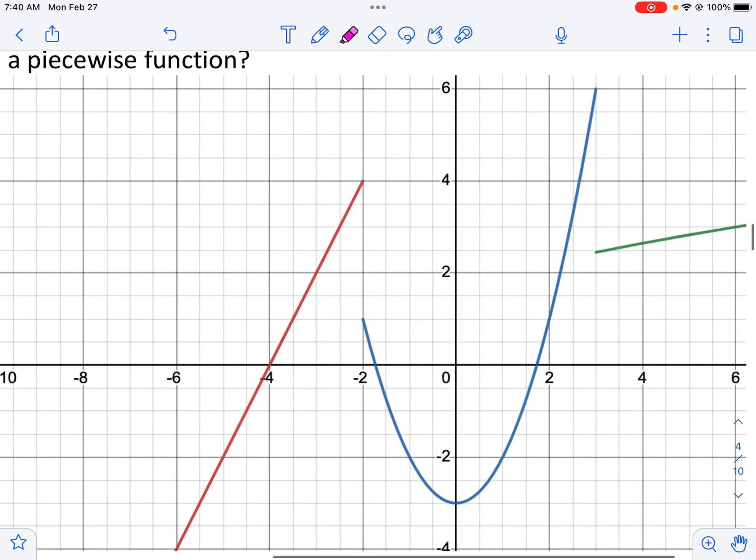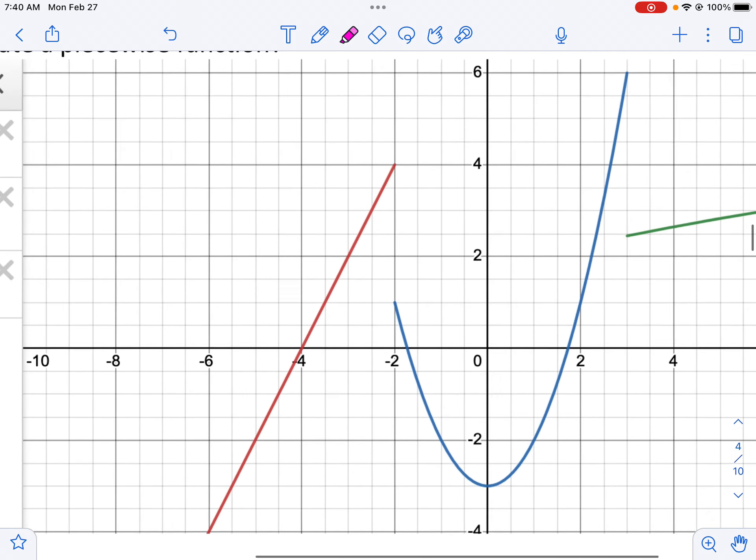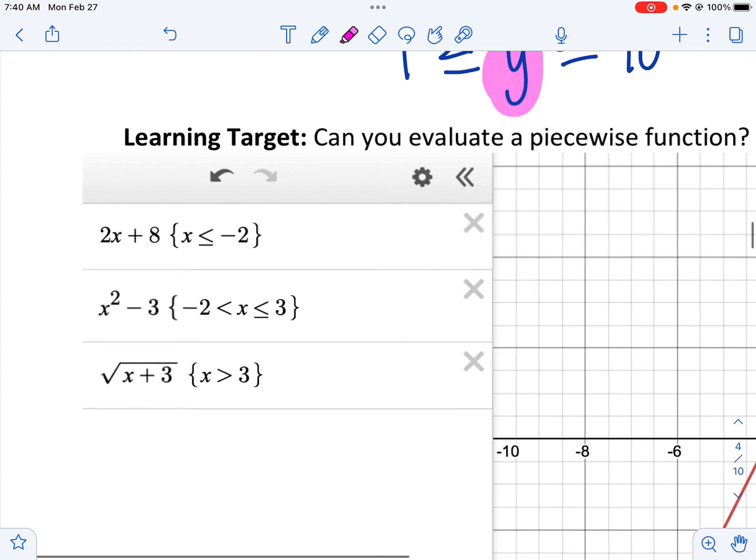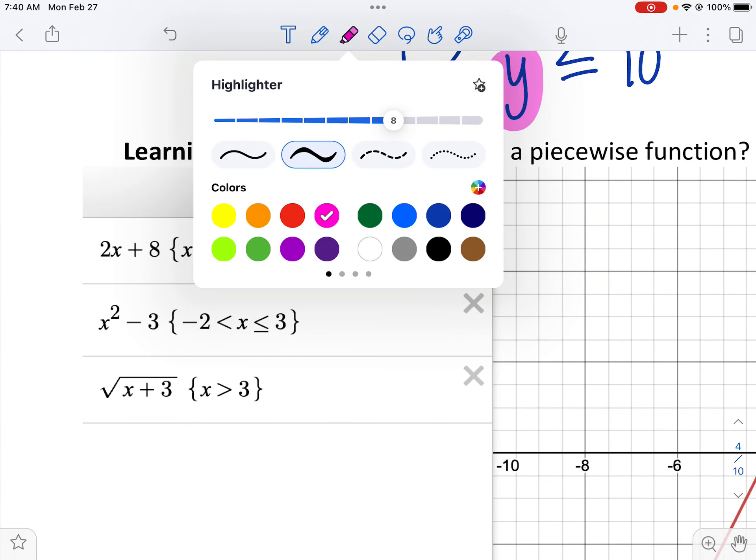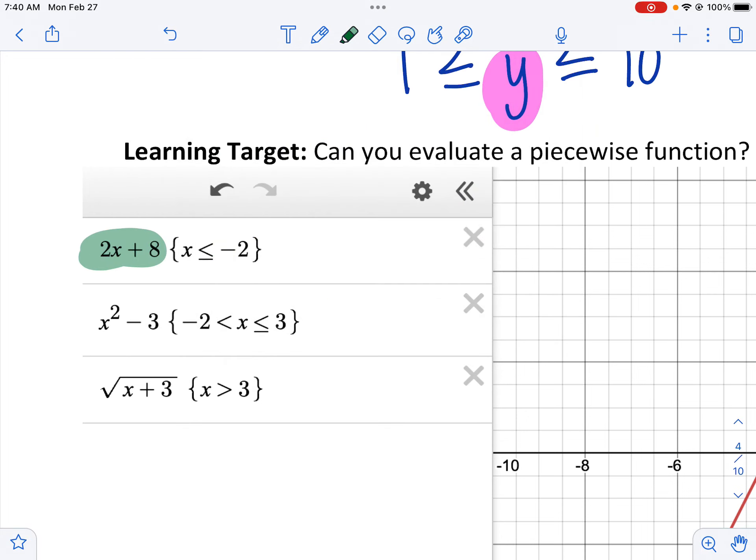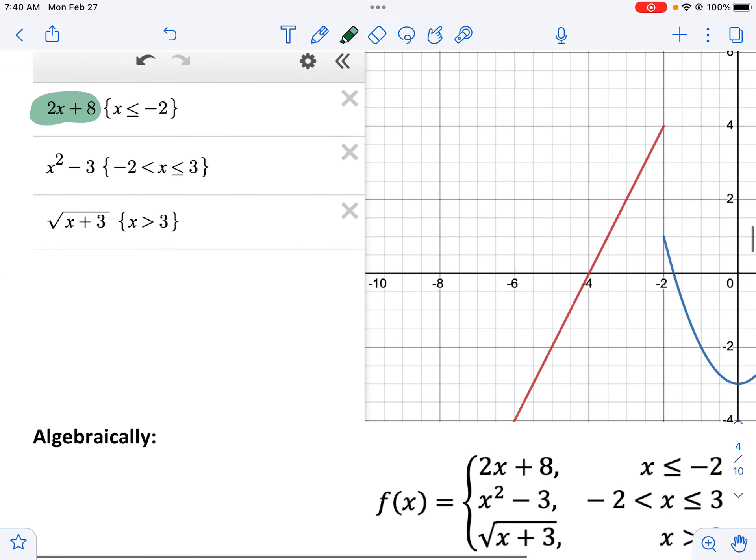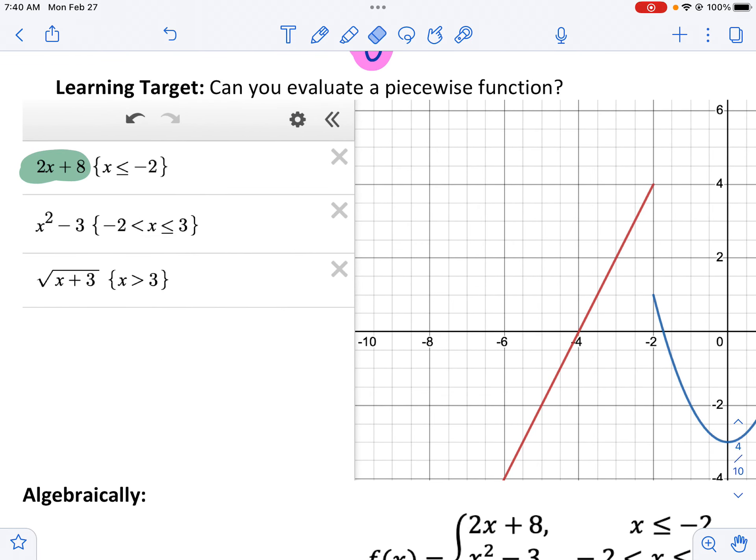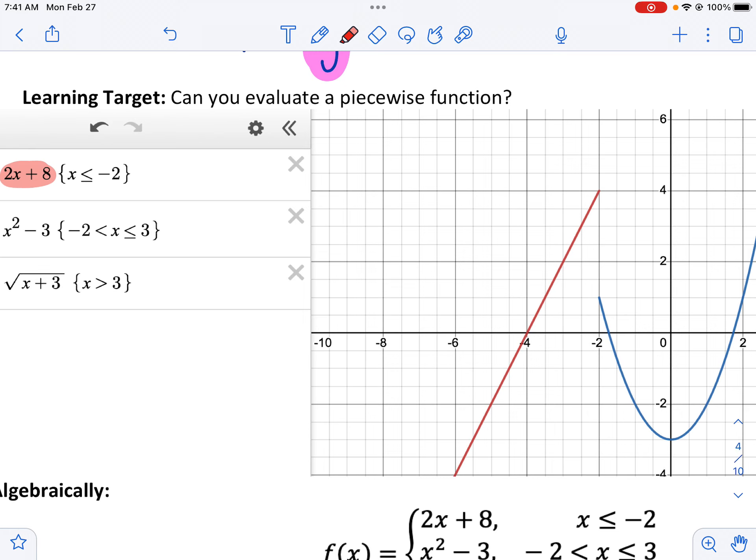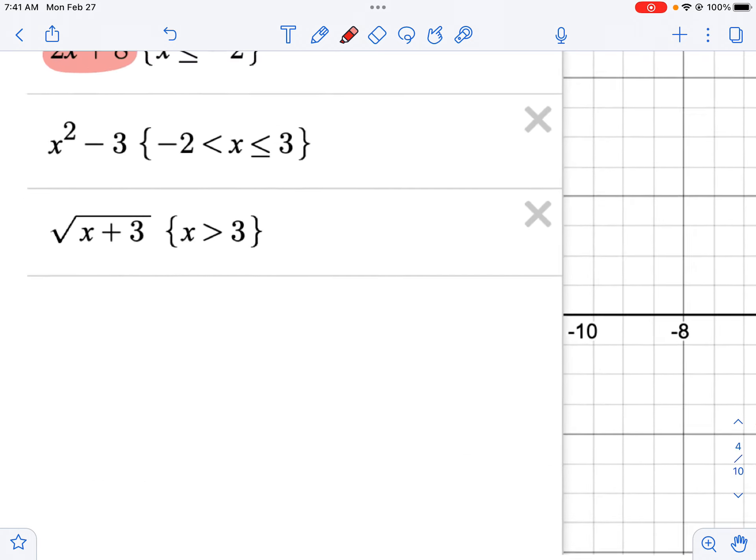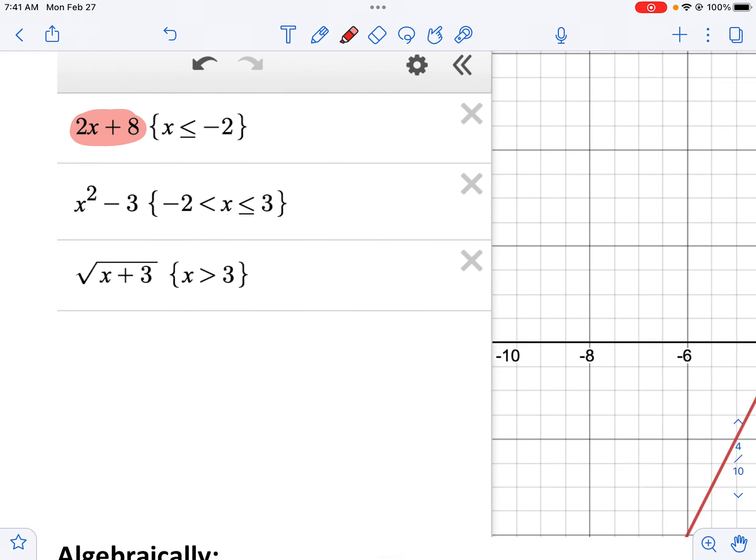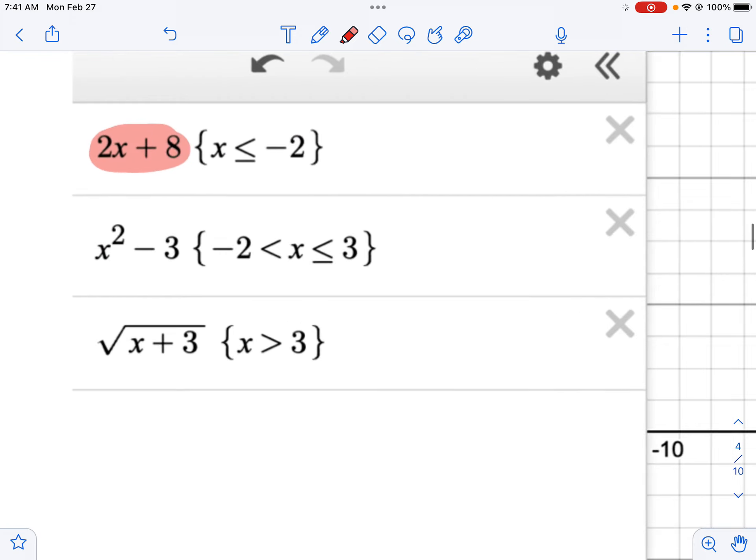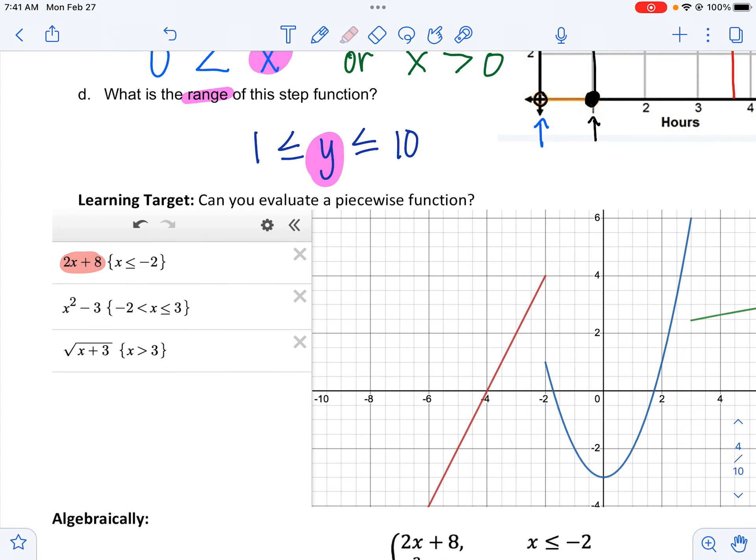So here's an example of one. Graphically, you can see that we have a line, a parabola, and another line. Here's what it looks like. Here's the actual function I'll highlight in green right here. It's 2x plus 8 when x is less than or equal to negative 2. I should actually highlight it in red. So there's that first one. And then it's x squared minus 3. There's the parabola when it's between negative 2 and 3. And then it's the square root function.